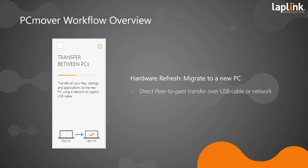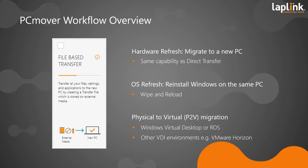There are four workflows available in PCMover Enterprise. The first is transfer between PCs — that direct live streaming transfer, most useful in a hardware refresh use case, migrating from an old PC to a new physical PC. The second is the file-based transfer — the asynchronous operation that is more versatile. It can be used for hardware refresh, or for a simple OS refresh where you re-image the same PC with a new image.